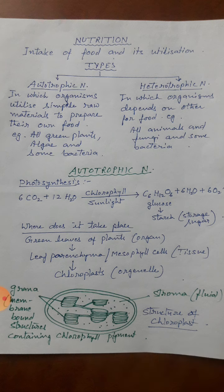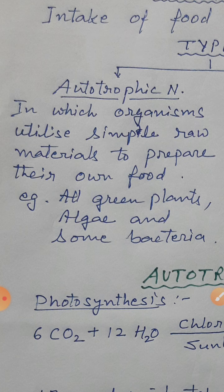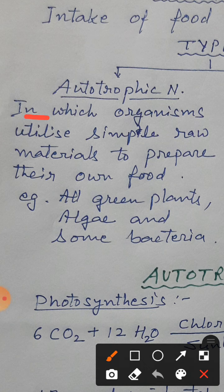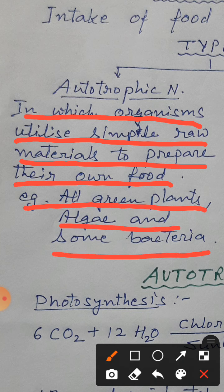What is autotrophic nutrition? Autotrophic nutrition is the nutrition in which organisms utilize simple raw materials to prepare their own food. Woh organisms jo nature se simple raw materials lekar apna food khud banate hain. Iske examples mein hain saare ke saare green plants, saare algae and some bacteria. Ye definition aapko learn kar lena hai.